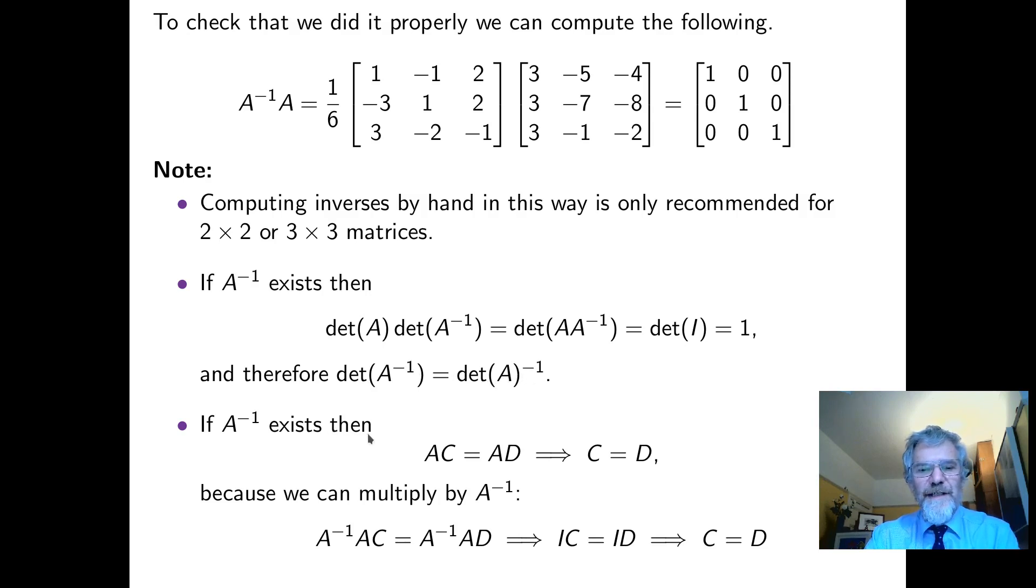Also if A inverse exists then if AC equals AD then C equals D. In other words if there is an inverse then you can cancel the matrix and you can actually cancel that on either side. We multiply both sides by A inverse and then we get C equals D. And of course you can do that with the A on the other side as well.